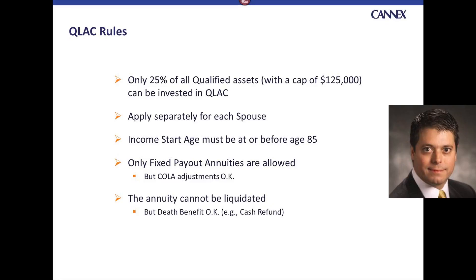This cap applies separately for each spouse, so you could apply the 25% rule to both individuals in that arrangement. And as mentioned, the income has to start at any time before age 85, or at age 85.